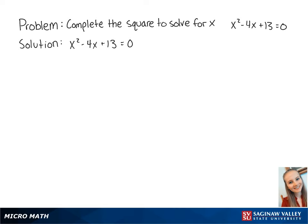For this problem, we want to complete the square to solve for x in the equation x squared minus 4x plus 13 equals 0.